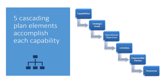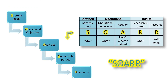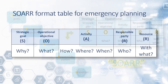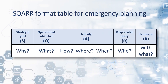We typically represent this cascading set of objectives as the SOAR format. This format not only allows us to connect goals at the top with activities, but also allows us to align national strategy at the very top with local resources at the very bottom. The ADEPT planning system uses this cascading format to create tables and charts. SOAR stands for strategic goals, operational objectives, activities, responsible parties, and resources. The SOAR format ensures that the elements of information included in the plan are complete.